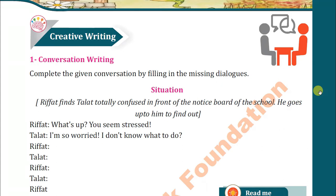The situation given is: Refer finds Talat totally confused in front of the notice board of the school, and he goes up to him to find out. Talat says: 'What's up? You seem stressed.' Refer replies: 'I'm so worried, I don't know what to do. I have failed to show satisfactory results in the math test.' Talat says: 'Oh, it's not a great problem, you can overcome this issue with little effort.' Refer asks: 'But how? I think math is not for me.' Talat replies: 'Don't think like that, you just need some practice.' Refer says: 'Okay, I can take help from my elder sister also, I'll do the practice.' Talat responds: 'Well, I think you're right, you need to gain confidence.' Refer concludes: 'Sure, and you can do that.'